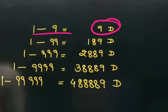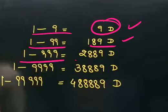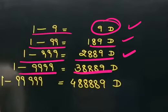9 digits: 1, 2, 9, 9, 2, 8, 8, 9, then 1, 2, 9, 9, 9, 3, 8, 8, 8, 9, and then 1, 2, 9, 9, 9, 9, 9.